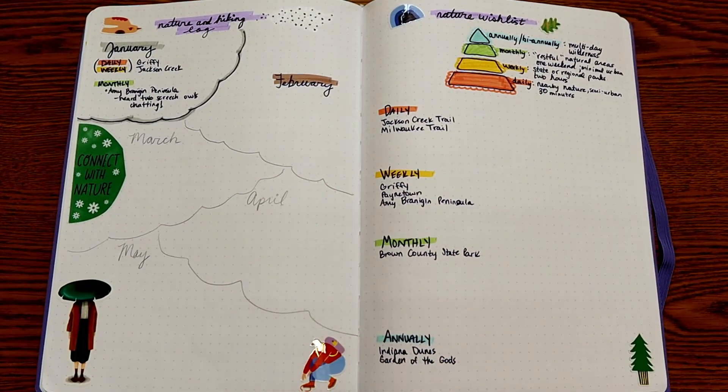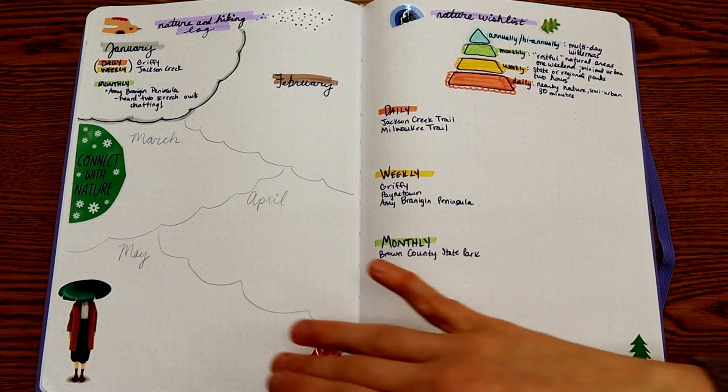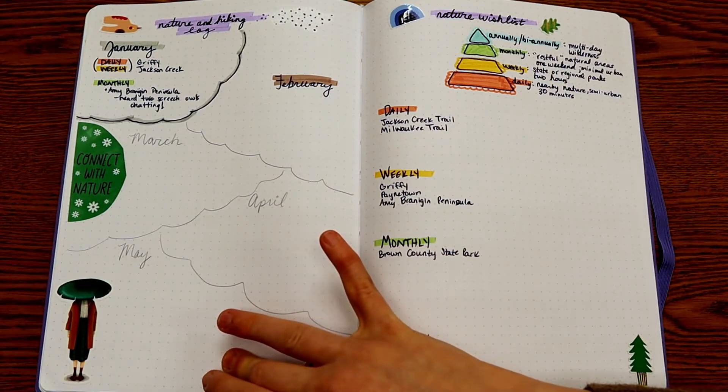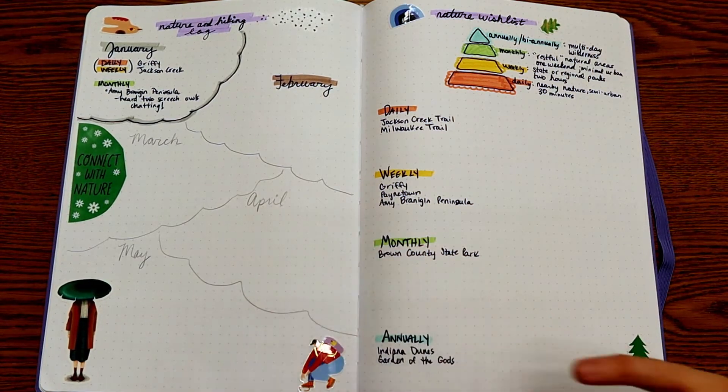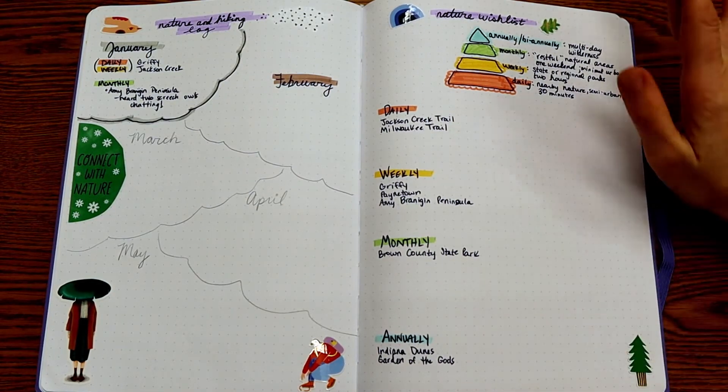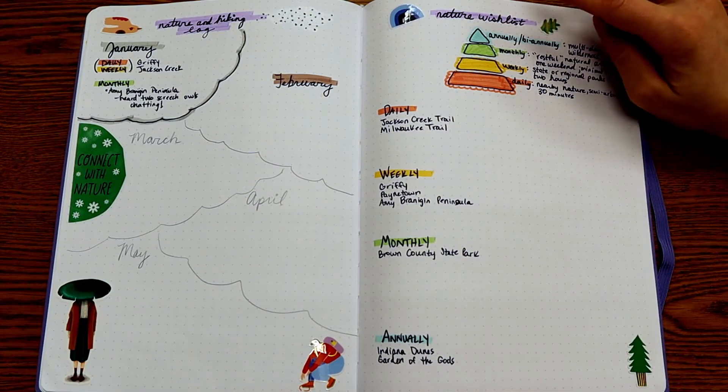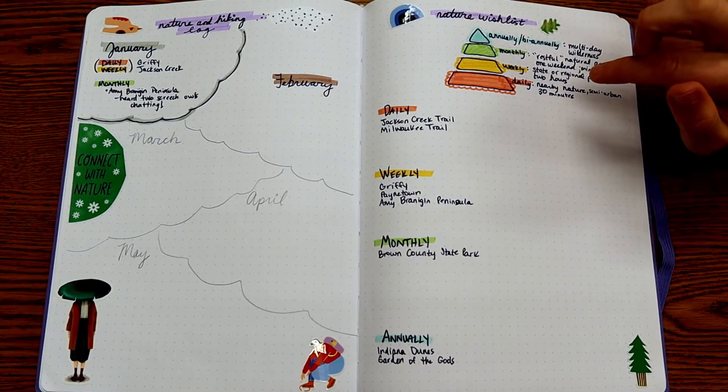I also have a nature and hiking log. So on the left, just like with the reading log, I want to track where I hike or spend time in nature. And then on the right, I have the nature hierarchy of needs. So the recommended dosage of nature that you ideally would need.